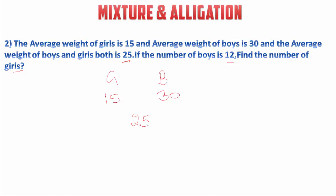We have to find the number of girls. We first find the ratio between the number of boys and girls. So: 30 minus 25 gives us 5, and 25 minus 15 gives us 10.